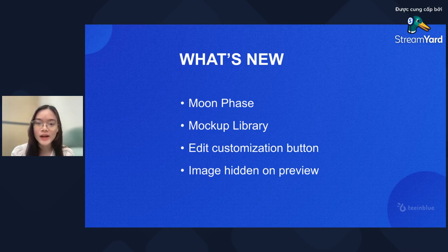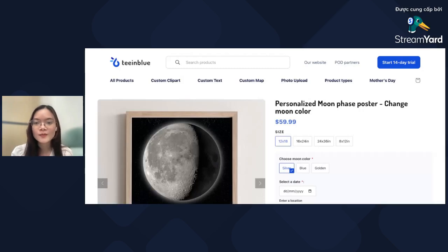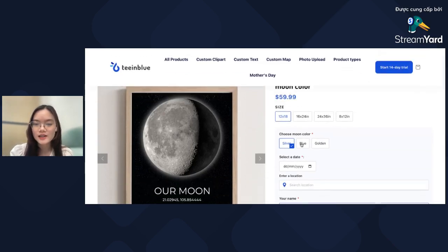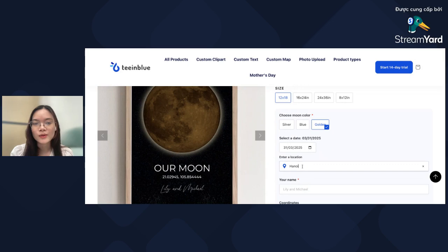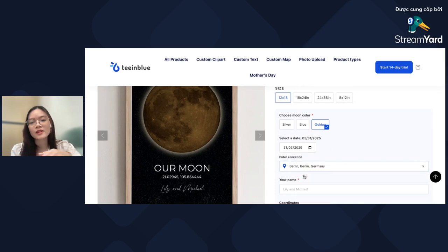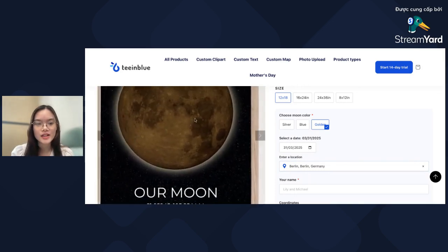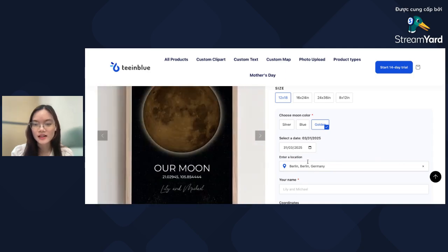Many sellers have requested a way to add a real-time Moonface to their design. Let me show you one of our campaigns for the Moon. With this feature, customers can choose the Moon color — here's blue, and here's golden — then enter a date, and also a location for the Moon. You will see the Moon face show up according to the date and the location.